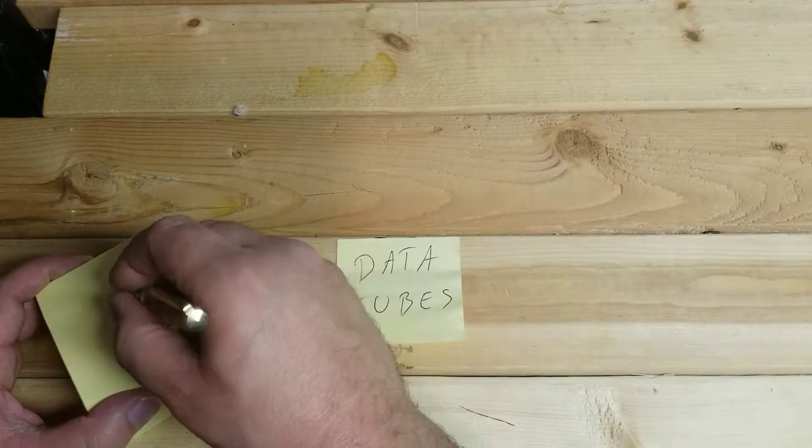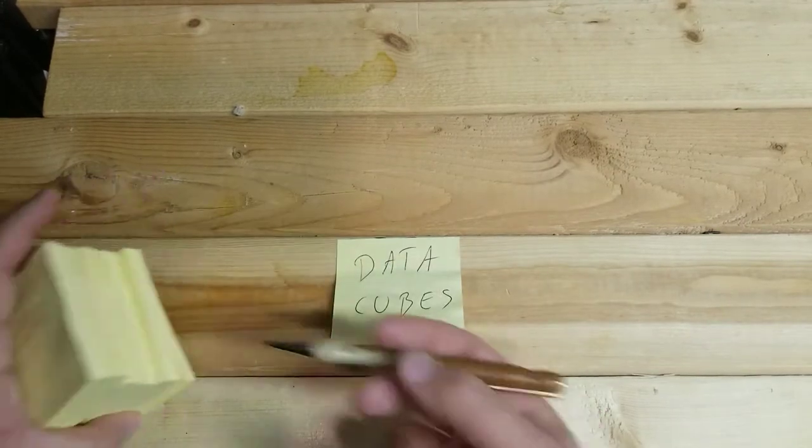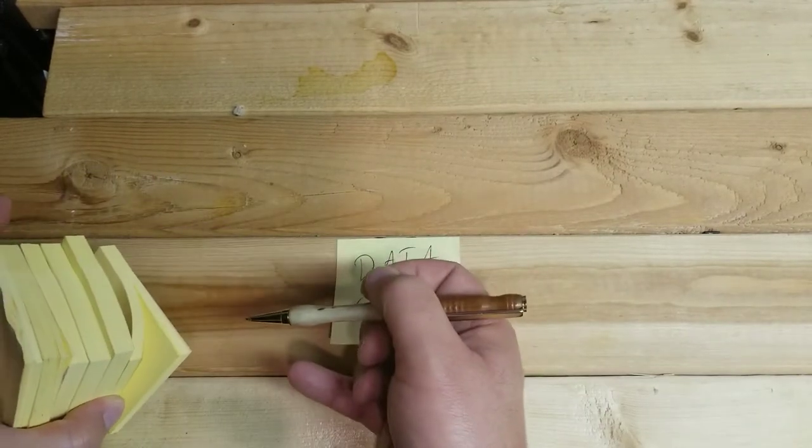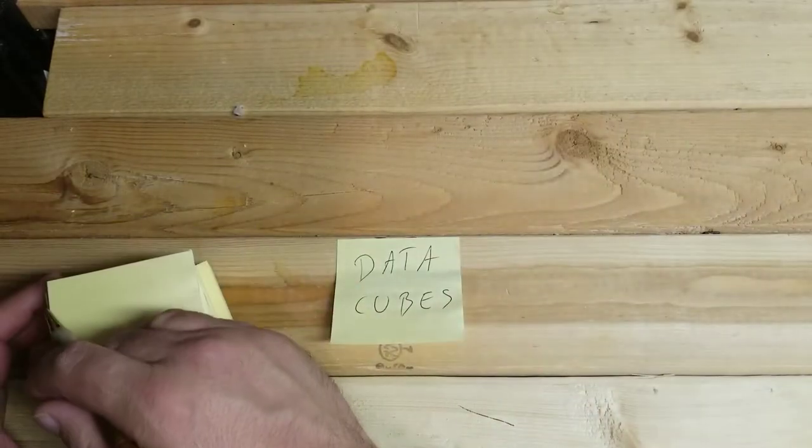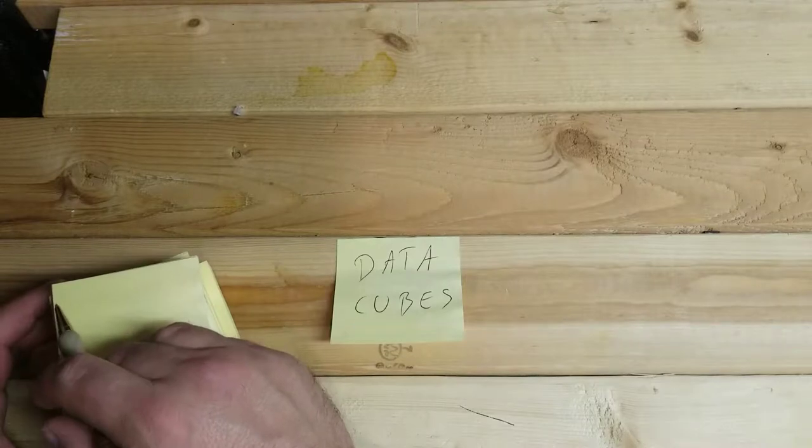So what is a data cube? A data cube is height, width, across depth. Don't understand yet? You will.